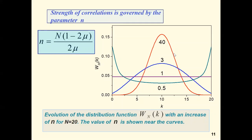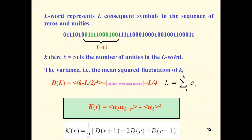There was the result of my microscopic examination. Now I would like to introduce some macroscopic characteristic for the random sequence. It is the variance and the correlation function. The definition: the L-word is L consequent symbols in the sequence of zeros and unities. We can see an example of the word of the length L equal to 11. Below we see the definition of the variance D as a correlator K. The variance is the mean of squared fluctuation of k. Next line gives the well-known definition of the correlation function.